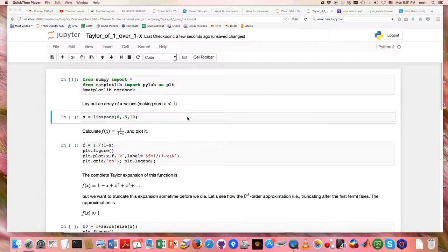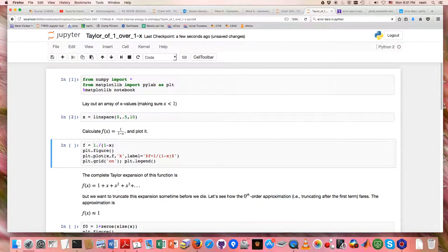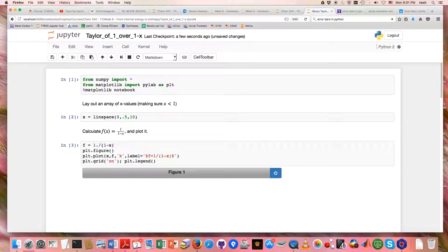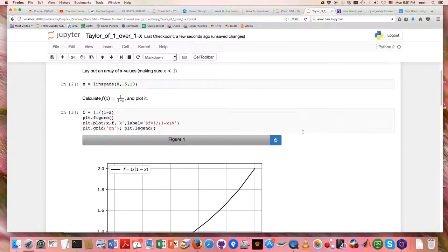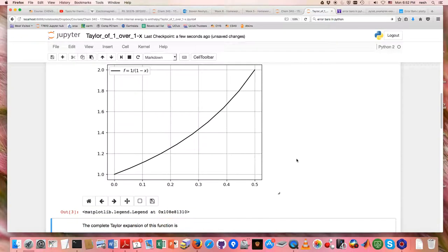So what I've done is I've laid out a set of x values, and now I'm going to calculate that function and make a graph of it. And so here we are. So this is the function 1 over 1 minus x as a function of x.